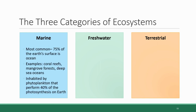Marine ecosystems are the most common since three quarters of the Earth's surface is occupied by ocean. Specific examples include coral reefs, mangrove forests, and deep sea ocean environments. A very important resident of marine ecosystems near the ocean surface is phytoplankton — tiny microscopic organisms that perform photosynthesis. They conduct 40% of the photosynthesis that takes place on Earth and therefore play a major role in cycling oxygen in the atmosphere.